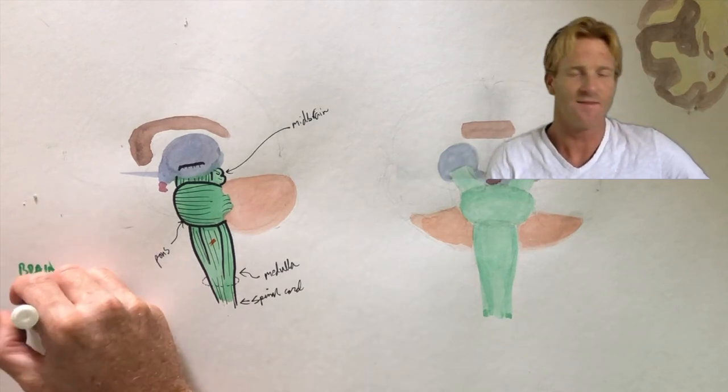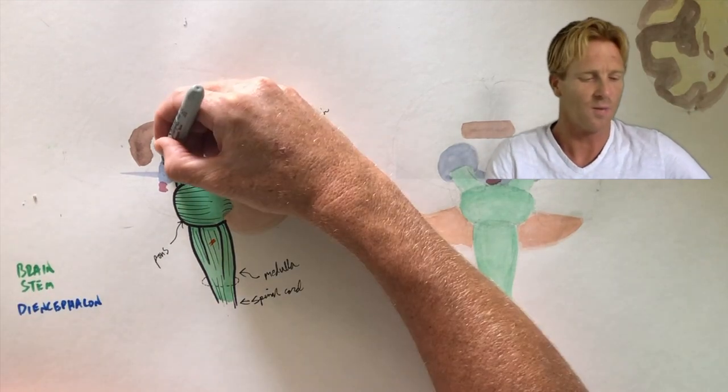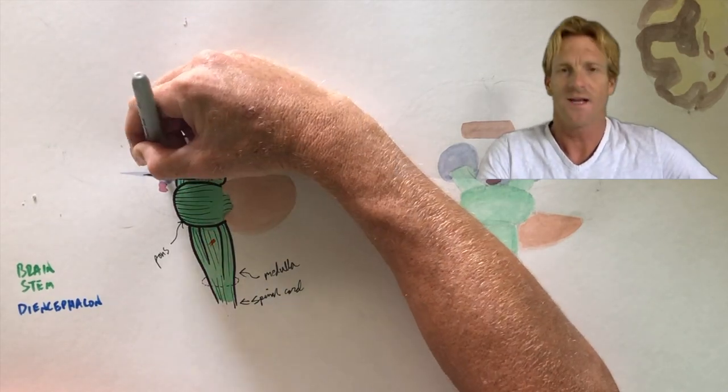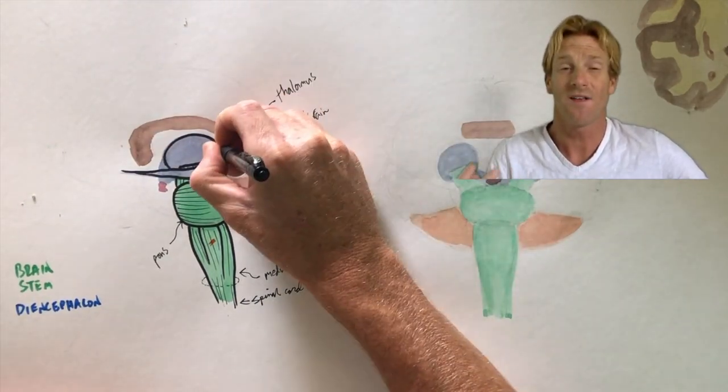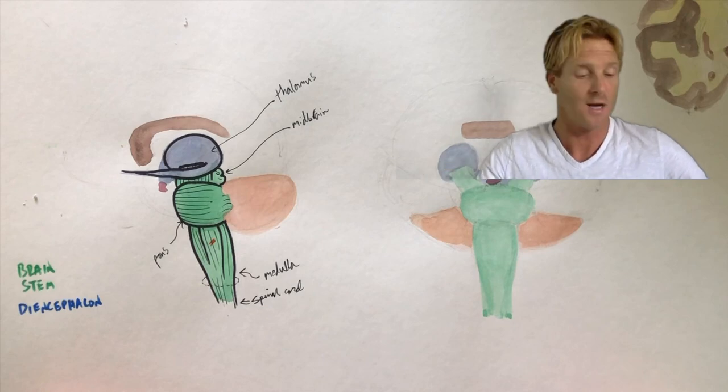On top of the brain stem you're going to have the diencephalon, superior to it. That's everything in purple. The thalamus is the part of the diencephalon that receives incoming sensory signals and tells those signals where to go for higher processing in the brain.